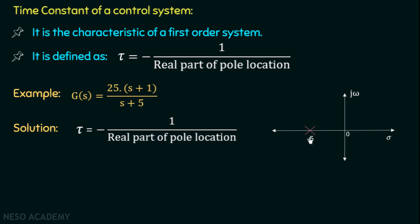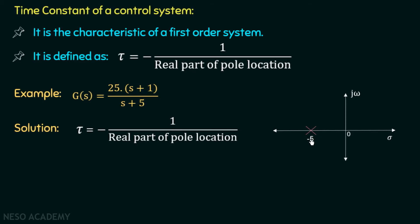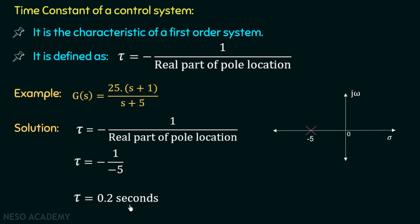Substituting the real part of the pole location into the formula, we get tau = -1/(-5), giving us a time constant of 0.2 seconds. So the time constant of this system is 0.2 seconds, and the unit of time constant is seconds.